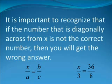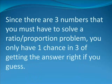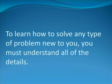It is important to recognize that if the number that is diagonally across from X is not the correct number, then you will get the wrong answer. Since there are three numbers that you must have to solve a ratio proportion problem, you only have one chance in three of getting the answer right if you guess.